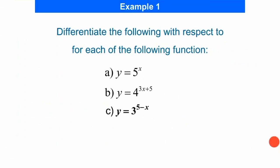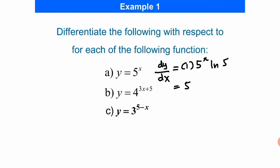Now we are going to try a few questions. For question A, the dy/dx is: differentiate the power, we get 1, and we copy back the question, and then we take ln of the base. So the answer is 5 to the power of x, ln 5.